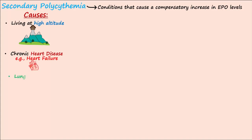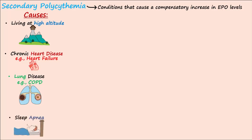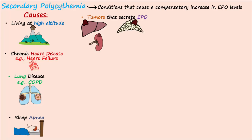Lung diseases like chronic obstructive pulmonary disease (COPD), where ventilation is compromised, and sleep apnea — suspension of breathing for short periods during sleep — lead to a rise in EPO from not getting adequate oxygen. Certain neoplasms or tumors that secrete excess amounts of EPO can also cause secondary polycythemia.